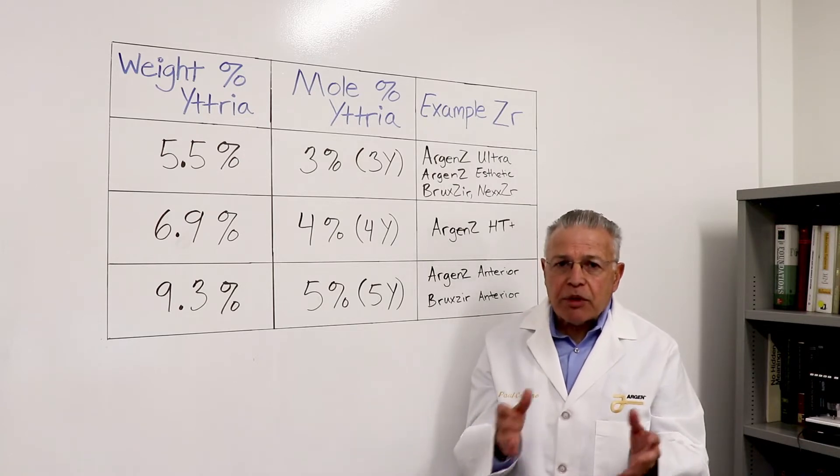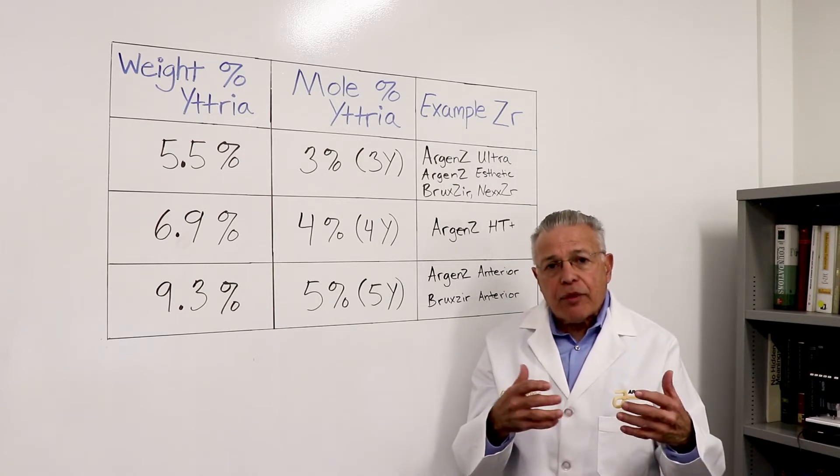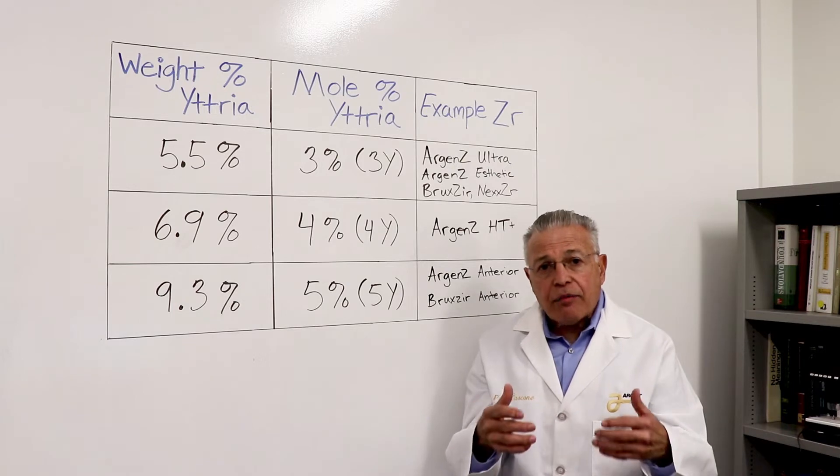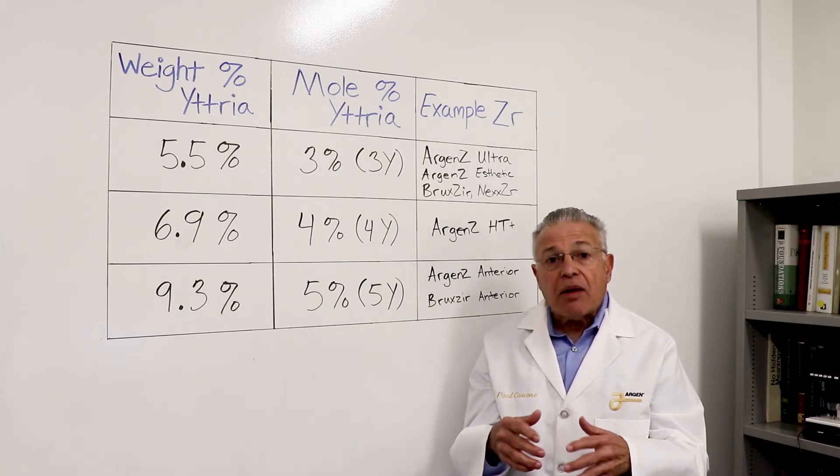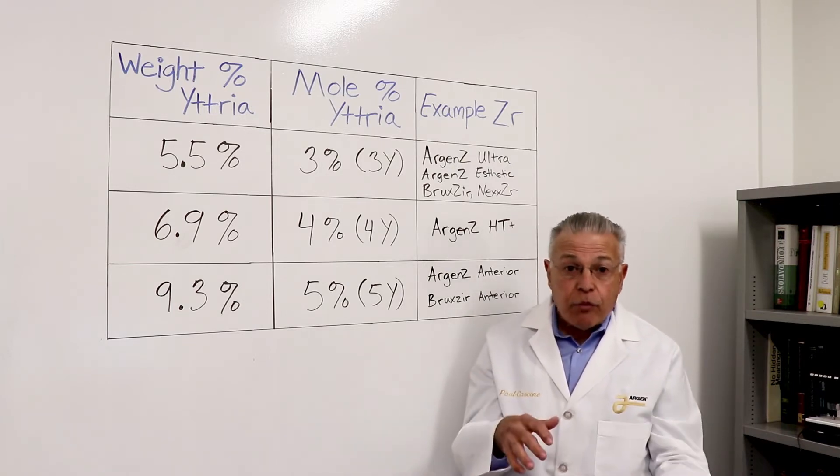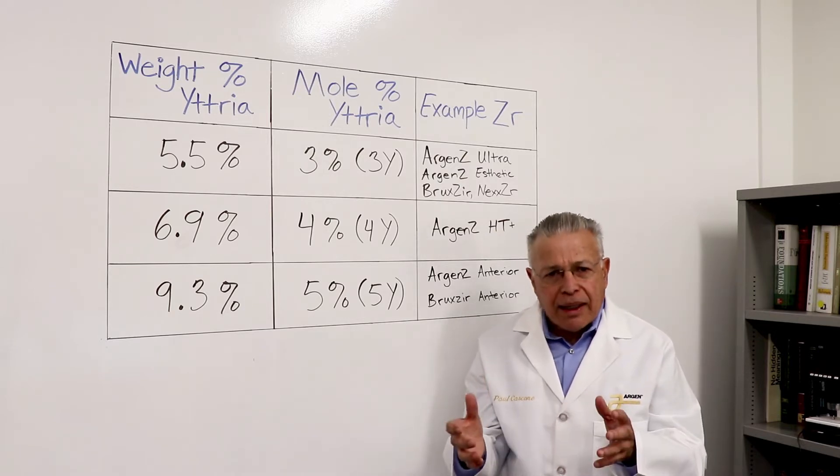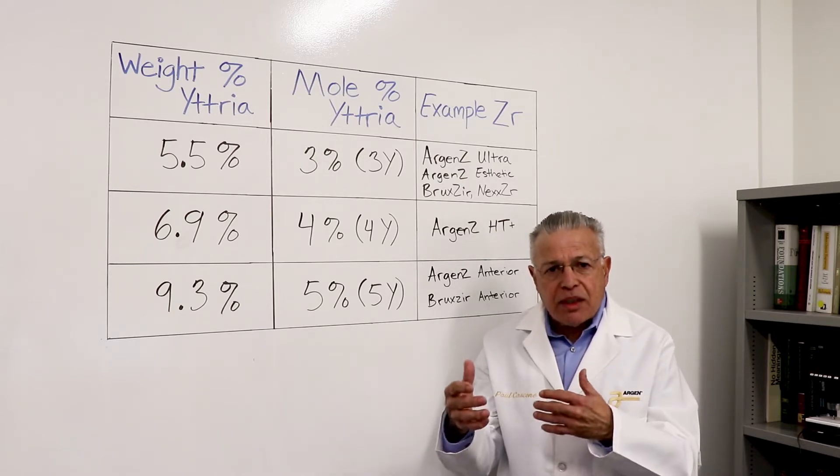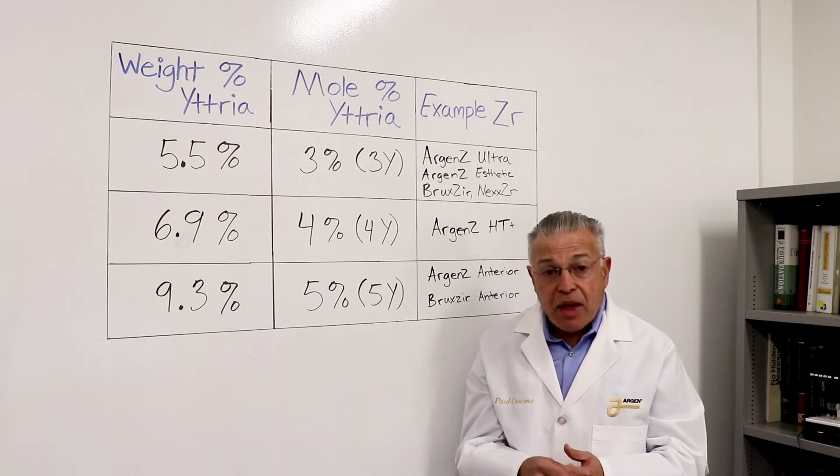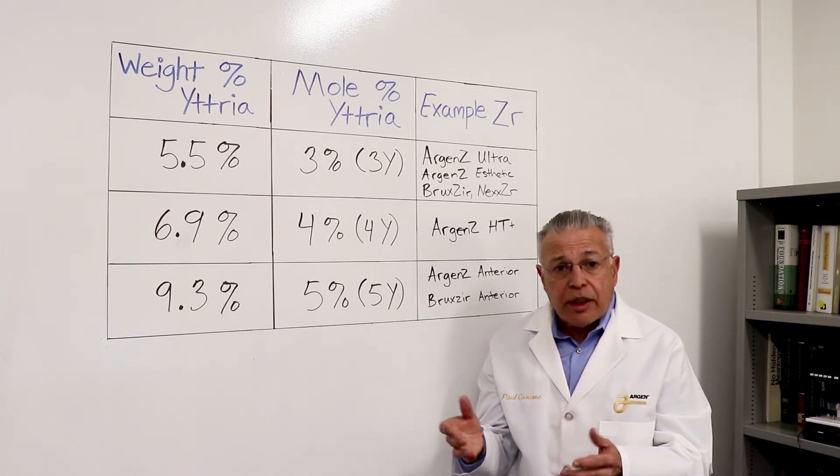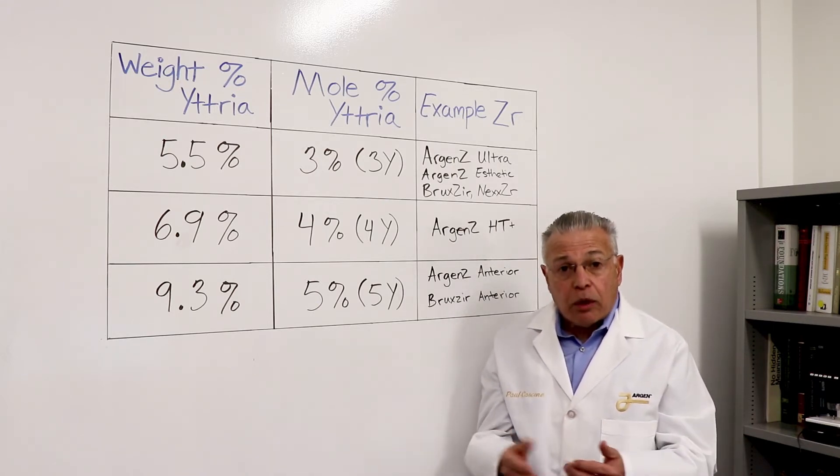The question is generally prompted when they have visited or heard of a clinician talking about 3Y zirconia, 5Y zirconia. These letters are a little strange because you generally don't see them on the zirconia packages. So we put together this little video to explain what that's all about.